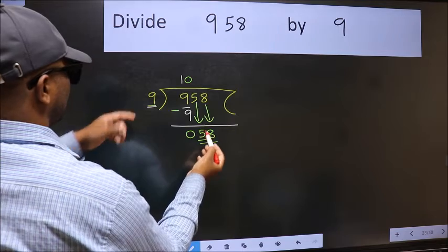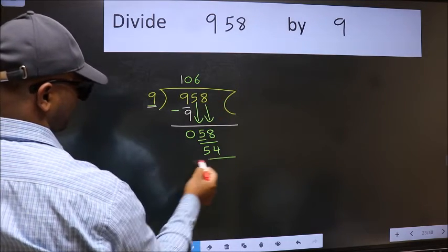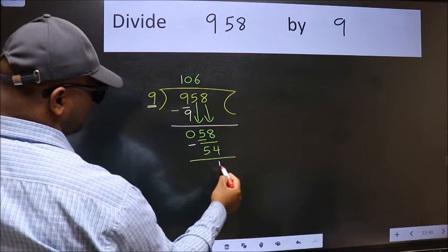Our number close to 58 in the 9 table is 9×6=54. Now we should subtract. We get 4.